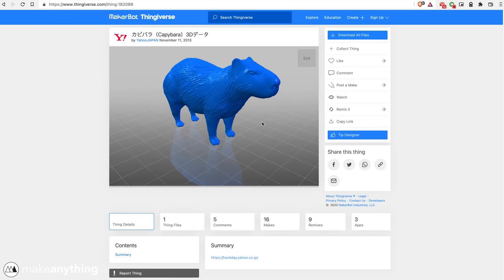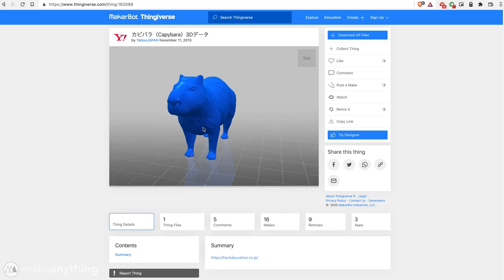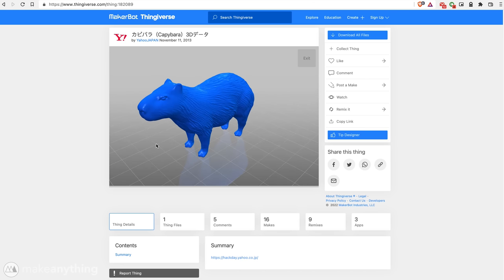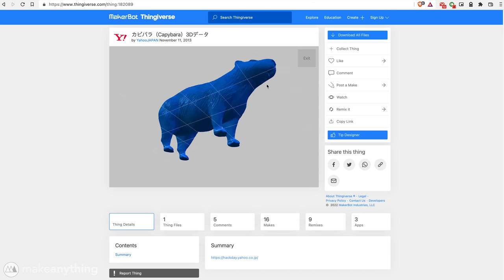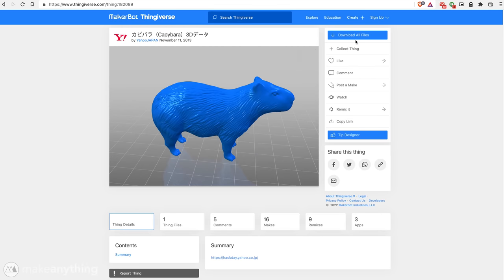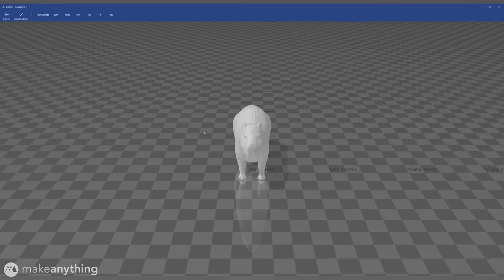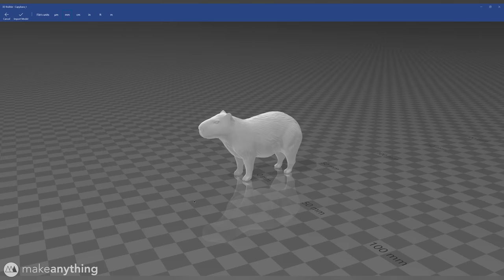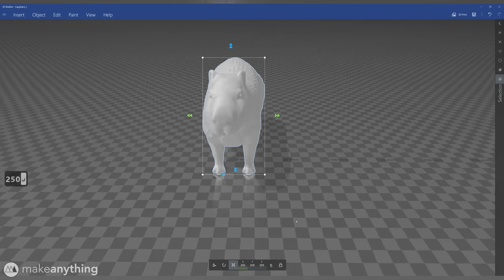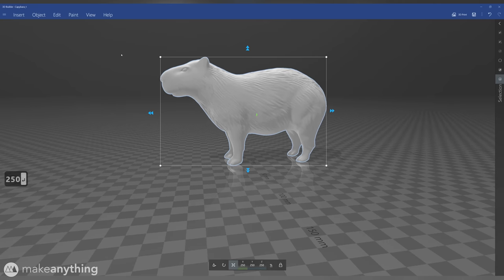To start off, we need to download our capybara model. I found this on Thingiverse, uploaded by Yahoo Japan, apparently. Anyways, it's a nice model and it should work perfectly for this demo. Let's download the STL file and bring it into Microsoft 3D Builder. 3D Builder is a great free tool for simple STL manipulation. This model is pretty tiny, so we'll scale it up by 250%, and then we can figure out how to split up our model into multiple pieces so that we can print it more easily.